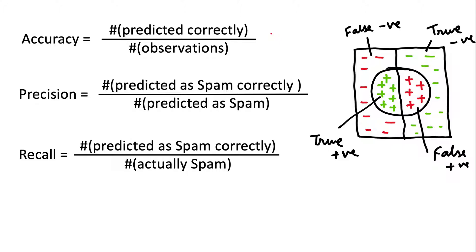For example, let's say we have 10 messages in our dataset and our model correctly predicted the label of 8 of them. Here accuracy is 8 by 10, or 0.8 — we say it is 80% accurate.